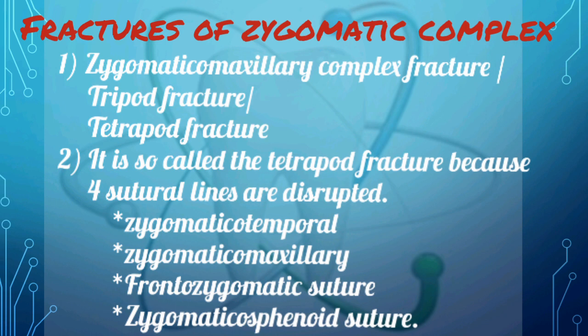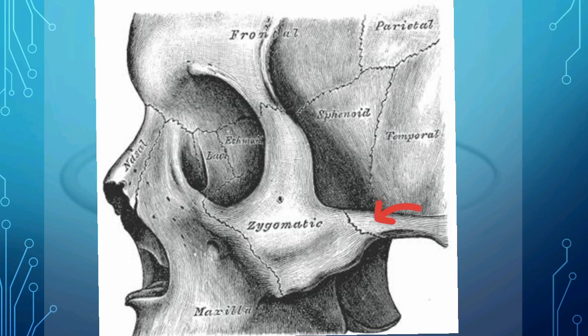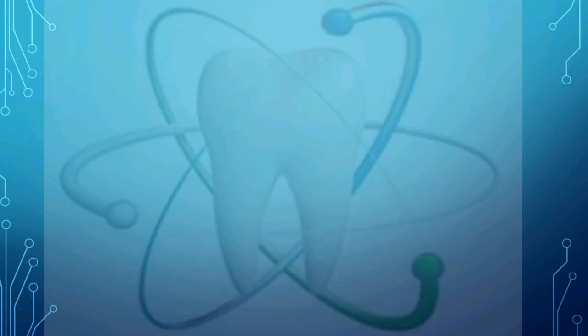The zygomatic complex fractures are also called zygomatico-maxillary complex fractures, or the tripod fractures, or the tetrapod fracture. It is called the tetrapod fracture because four sutural lines are disrupted: namely the zygomatico-temporal, the zygomatico-maxillary, the fronto-zygomatic suture, and the zygomatico-sphenoid suture.